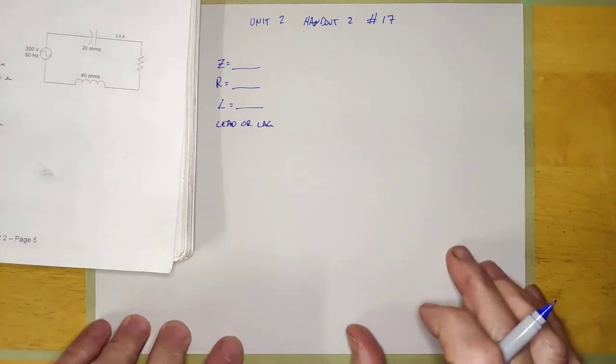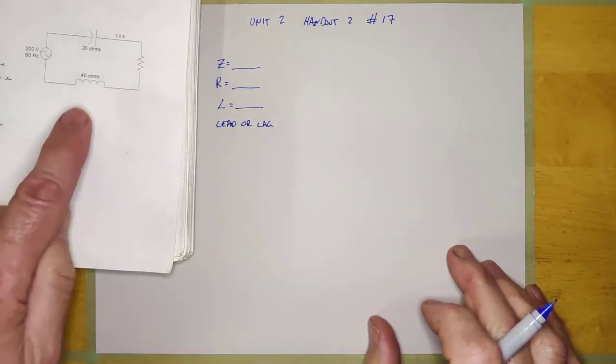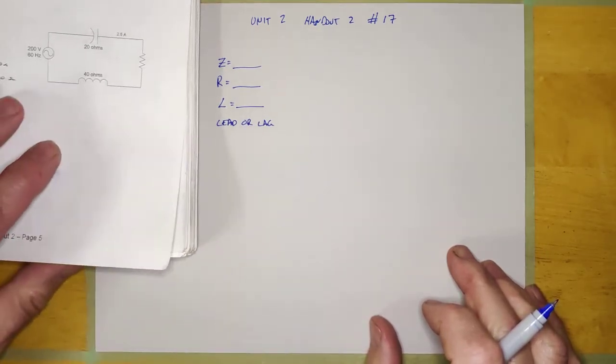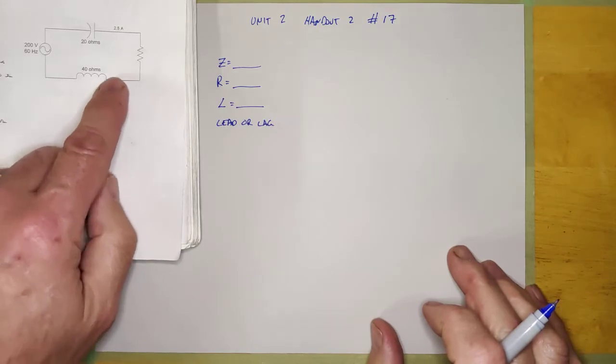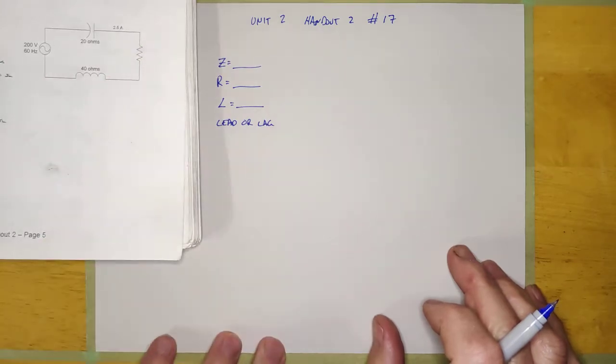Okay guys, so we're going to take up this question here, unit 2 handout 2. It's question number 17, and I've got the drawing right here in the corner for you to see. 20 ohm capacitor, 40 ohm inductor, resistor unknown.